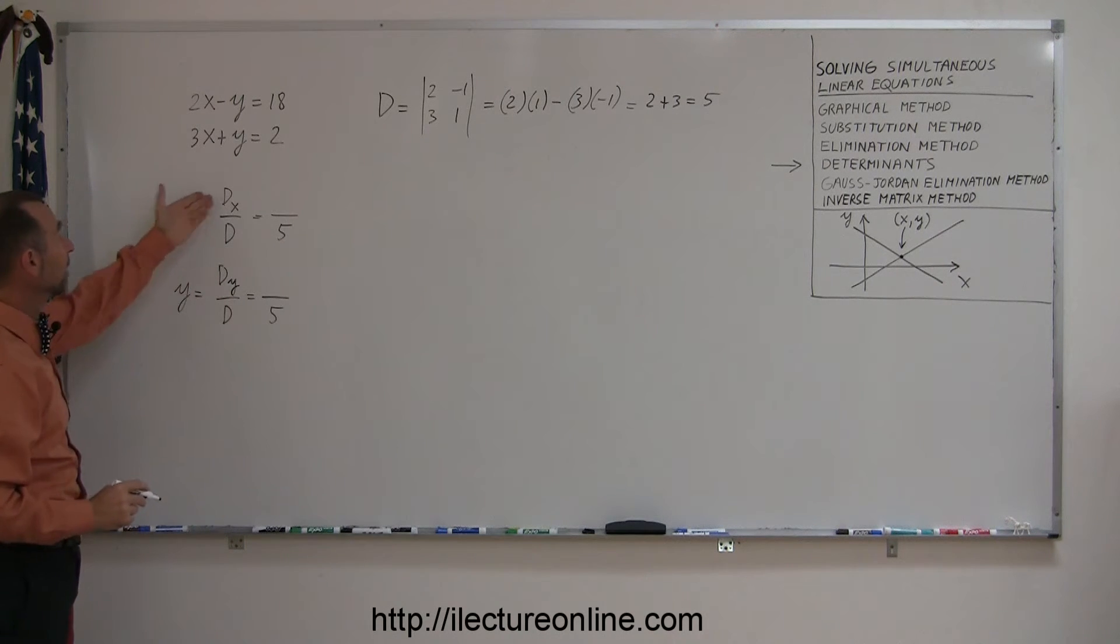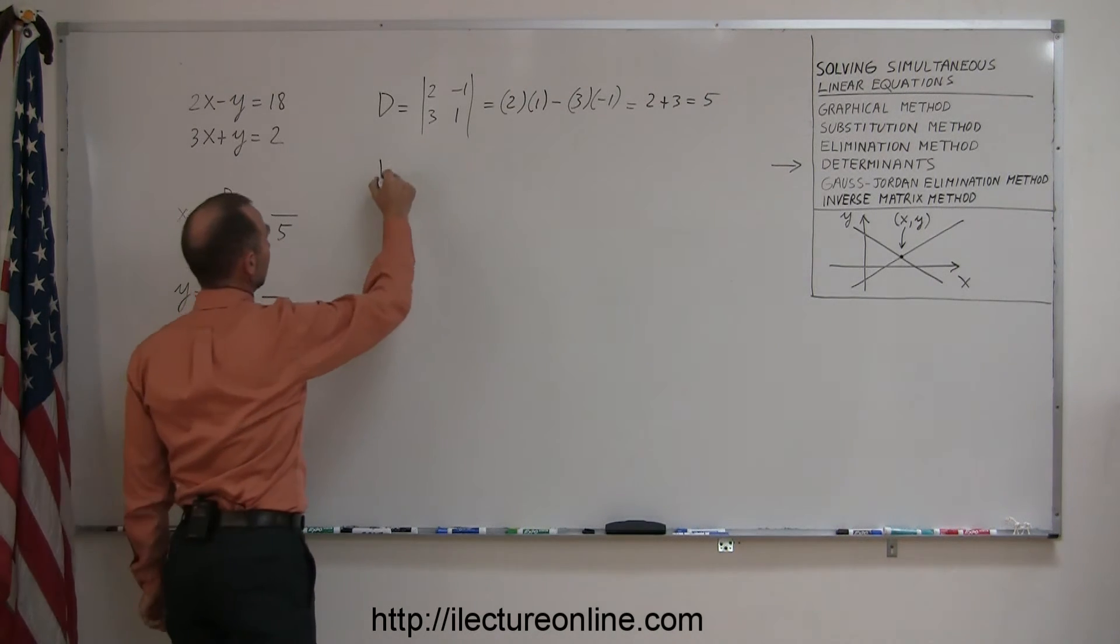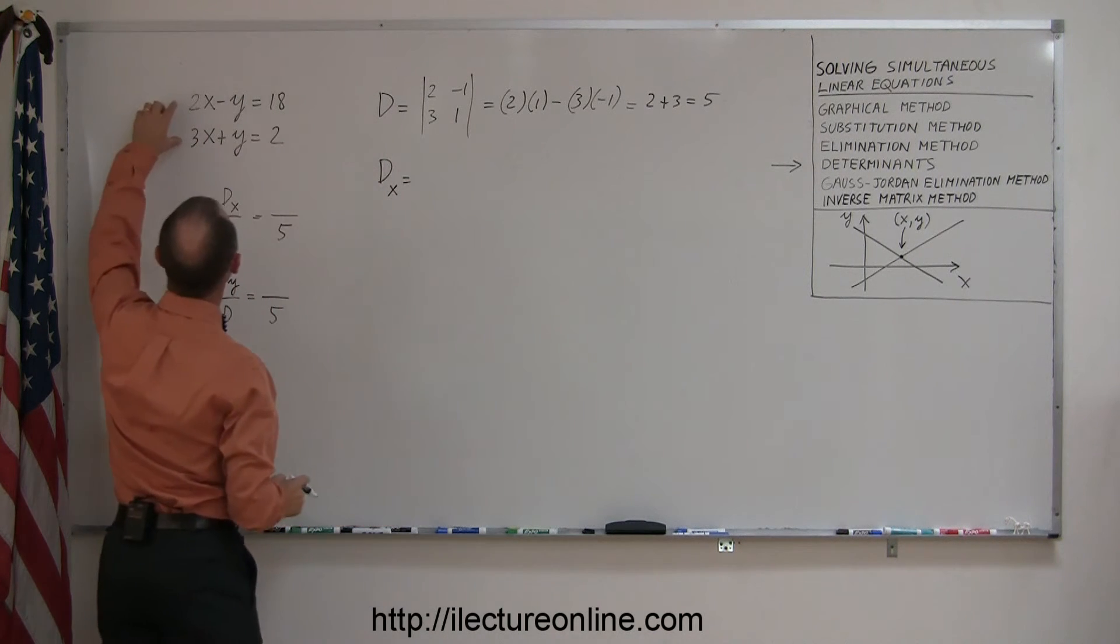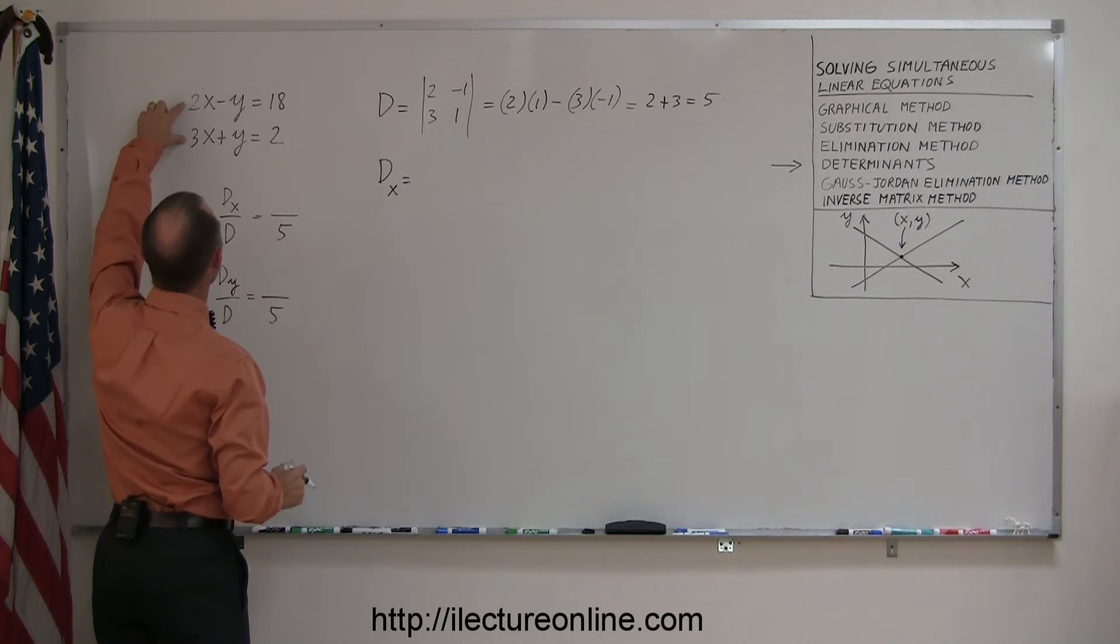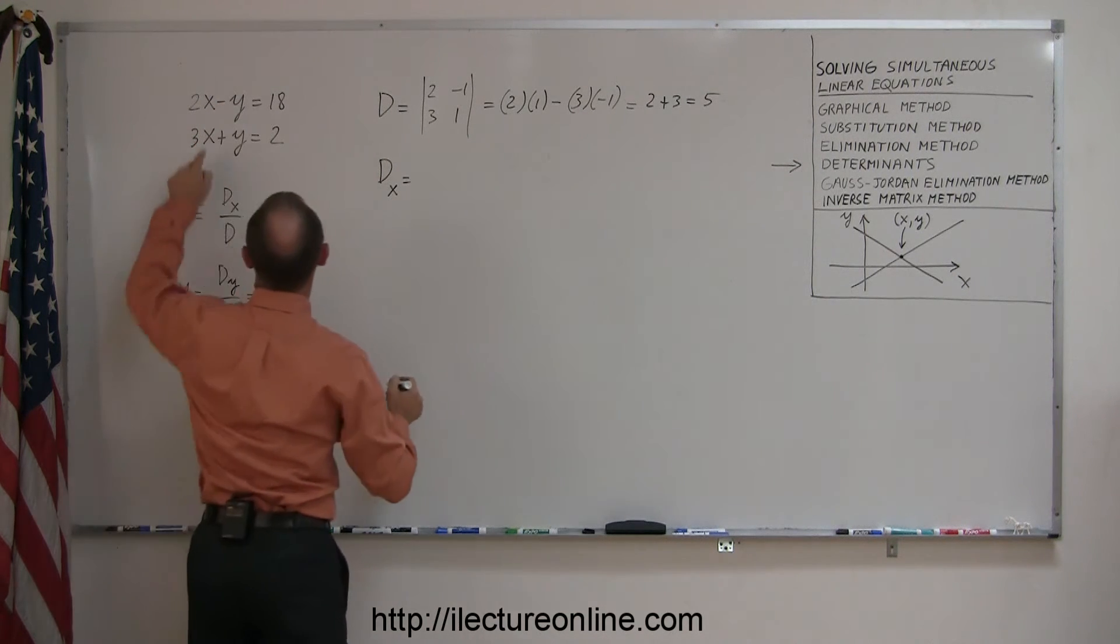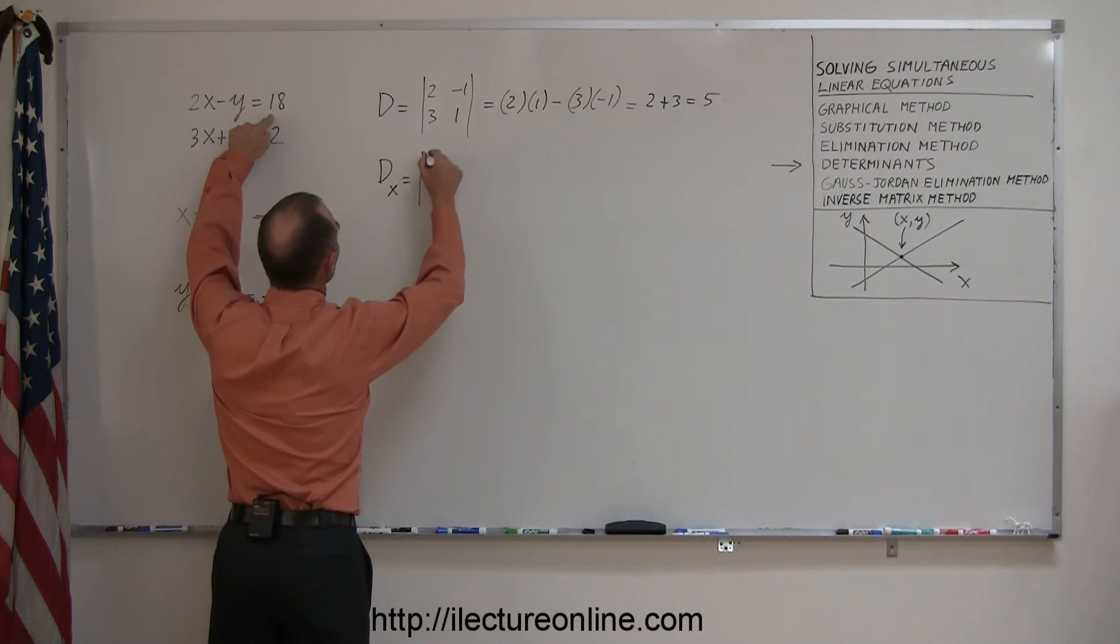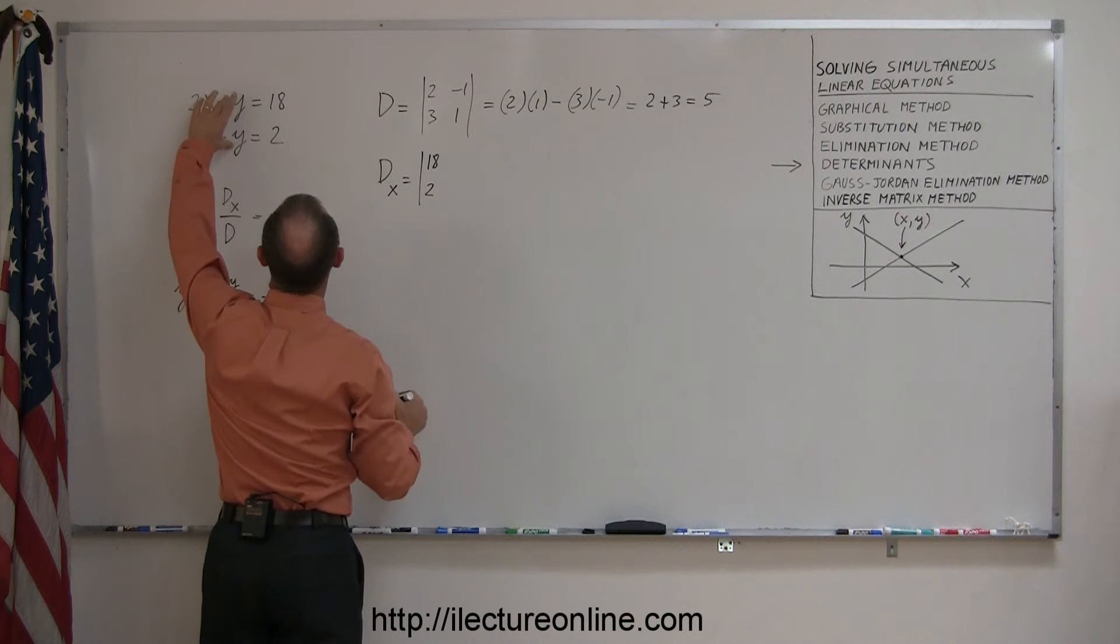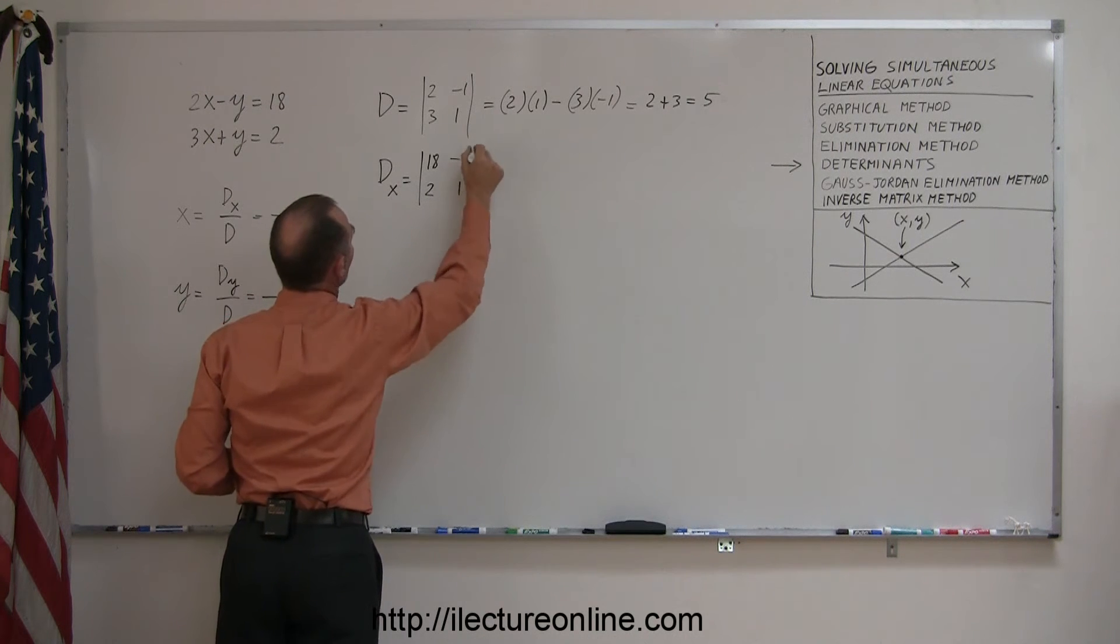Alright, now we have to find the d sub x. And that is equal to the very same determinant, but by replacing the coefficients in front of the x variable by the constants on the right side of the equation. So instead of 2, we'll write 18. Instead of a 3, we'll write a 2. And the two coefficients of the y will remain as of minus 1 and 1.